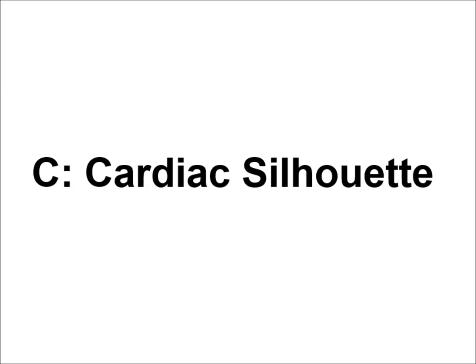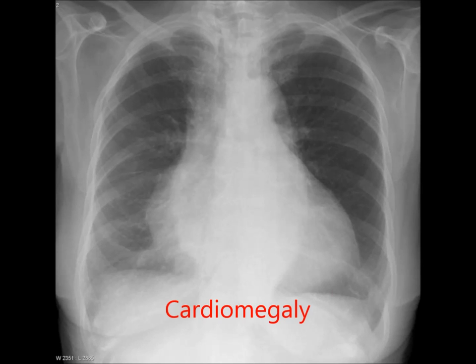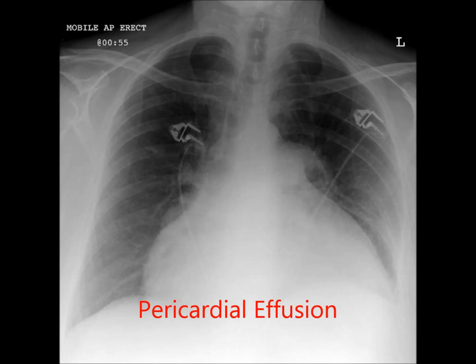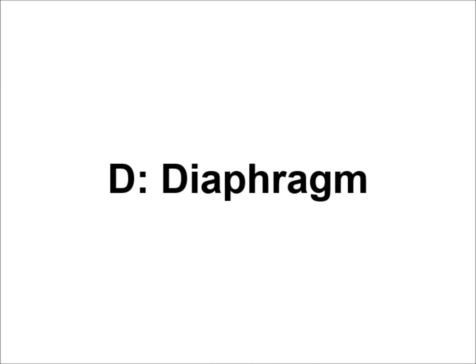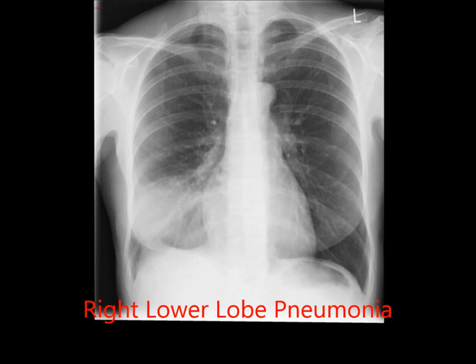C is the cardiac silhouette. On a PA film, the heart should be less than half of the chest width. An enlarged cardiac silhouette is most commonly caused by cardiomegaly; pericardial effusion is another important cause. D is the diaphragm. A normal diaphragm has a sharply visible border, curves downwards at the edges, and the costophrenic angles should be clearly visible, as should the cardiophrenic angles. A poorly defined hemidiaphragm might be due to lower lobe consolidation, whilst a blunted costophrenic angle is likely due to a pleural effusion.